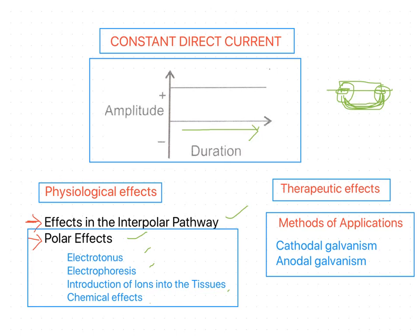Now we will move on to the polar effects. These are the effects produced in the tissues immediately under the electrodes and differ at the anode and cathode. The effects at the cathode are different from those at the anode. There are four types of polar effects: electrotonus, electrophoresis, introduction of ions into the tissues, and chemical effects.